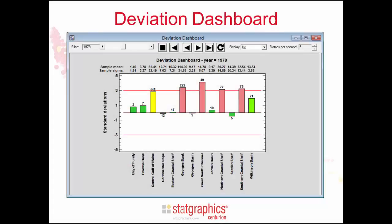The deviation dashboard is used to monitor multiple variables. At a given point in time, it shows with a bar how many standard deviations each variable is from its mean. Bars are colored green, yellow, or red, depending upon the position of the bar with respect to the three sigma limits. The statlet controls on the toolbar may be used to change the year at which the data are displayed.